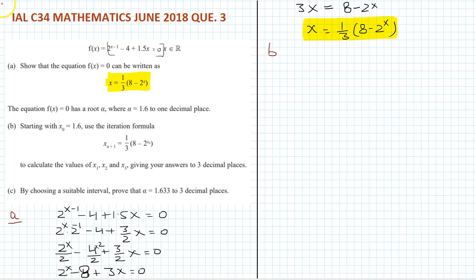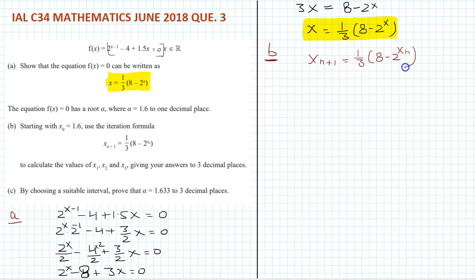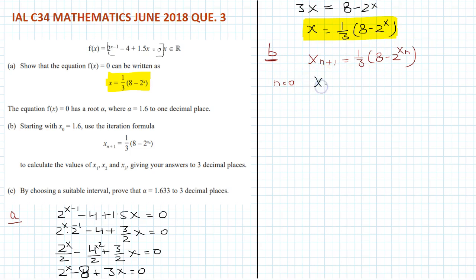Now part b. Part b starts with x₀ equals 1.6. Use the iteration formula xₙ₊₁ equals one third times (8 minus 2 to the power xₙ). So our formula is xₙ₊₁ equals one third times (8 minus 2 to the power xₙ). For n equals 0: x₁ equals one third times (8 minus 2 to the power x₀), and x₀ is 1.6.